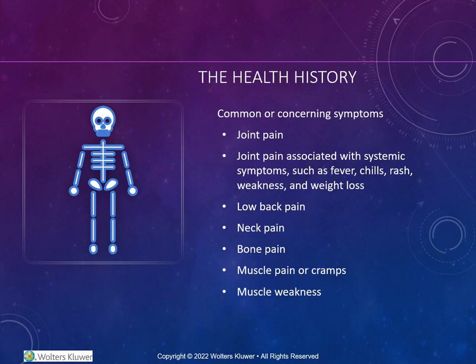Common or concerning symptoms in the musculoskeletal history include joint pain, especially joint pain associated with symptoms such as fever, chills, rashes, weakness, and/or weight loss. Some examples of autoimmune diseases that also have musculoskeletal manifestations are lupus, psoriatic arthritis, and polymyalgia rheumatica, also known as PMR.